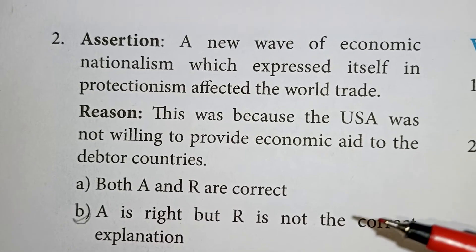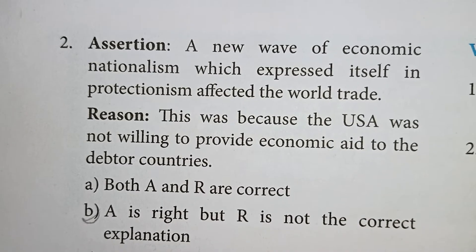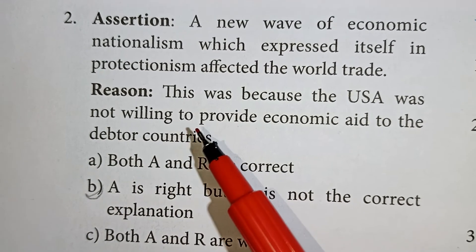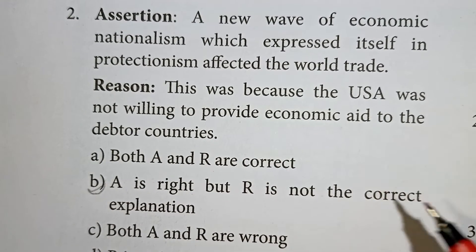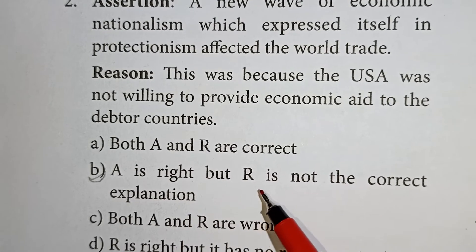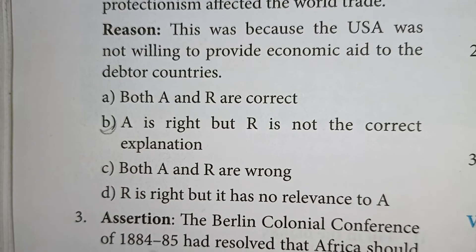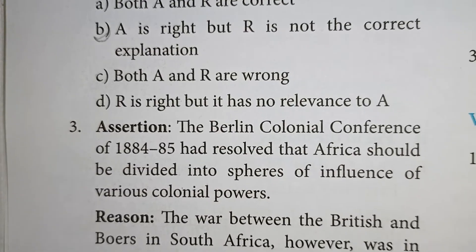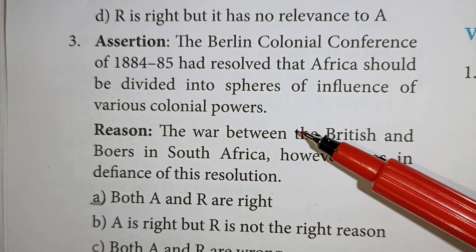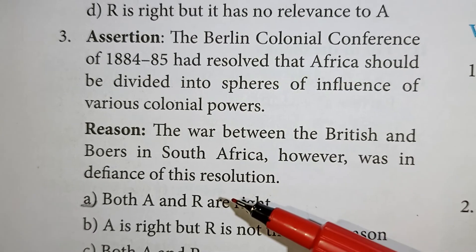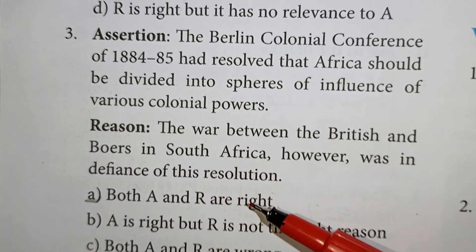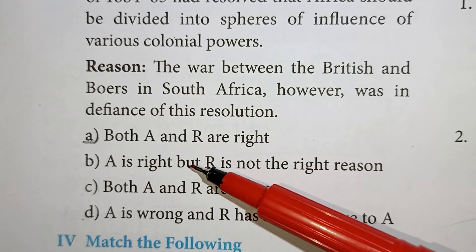Assertion: the new wave of economic nationalism which expressed itself in protectionism affected world trade. Reason: the USA was not willing to provide economic aid to debtor countries. The assertion is right but the reason is not the correct explanation — option A. Next assertion: the Berlin Colonial Conference of 1884 and 1885 resolved that Africa should be divided into spheres of influence of various colonial powers. Reason: the war between the British and the Boers in South Africa was in defense of this resolution. Both assertion and reason are correct.